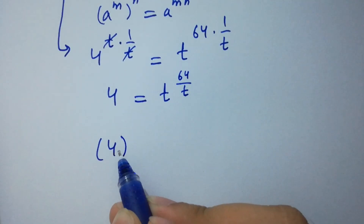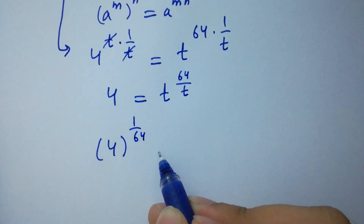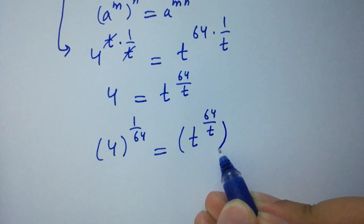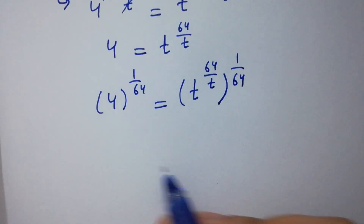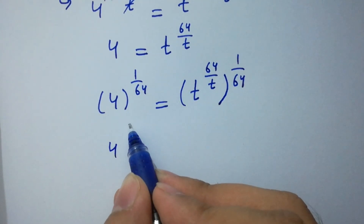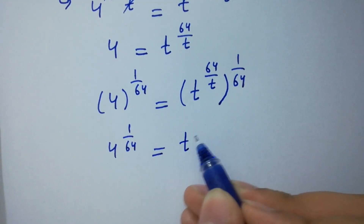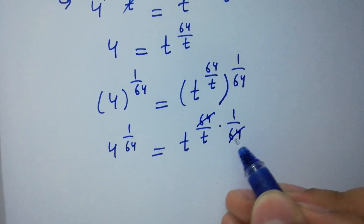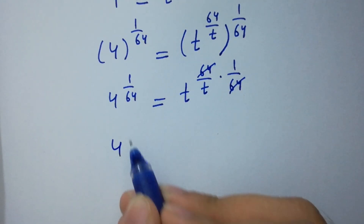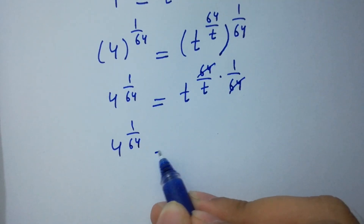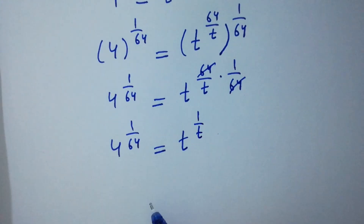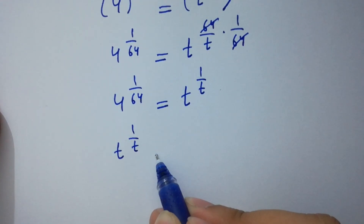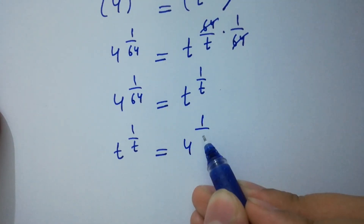4 to the power 1 over 64 equals t to the power 64 over t times 1 over 64. Since 64 and 64 cancel, we have 4 to the power 1 over 64 equals t to the power 1 over t, which can be written as t to the power 1 over t equals 4 to the power 1 over 64.